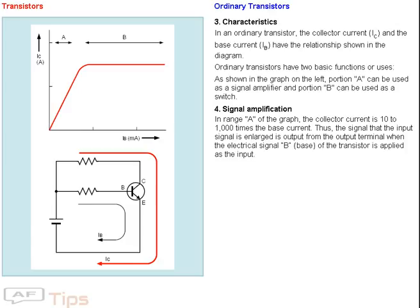Characteristics: In an ordinary transistor, the collector current IC and the base current IB have the relationship shown in the diagram. Ordinary transistors have two basic functions or uses. As shown in the graph on the left, portion A can be used as a signal amplifier and portion B can be used as a switch.